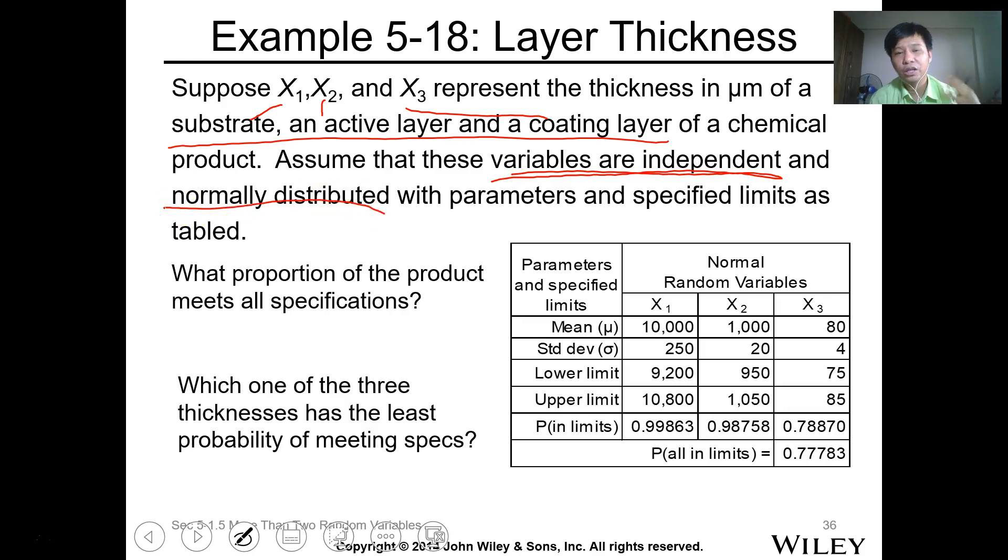With the parameters and specified limits on the table, you have the lower and upper limit, the mean, and the standard deviation of the data for x1, x2, and x3. The question is: what proportion of the product meets the specification? Meaning, everything follows the specification.